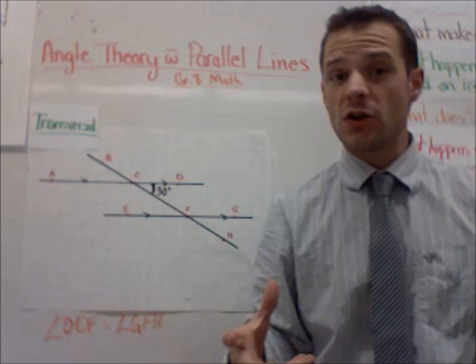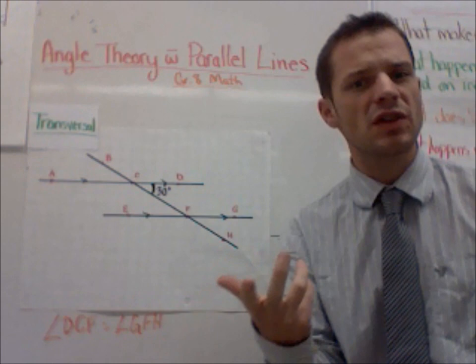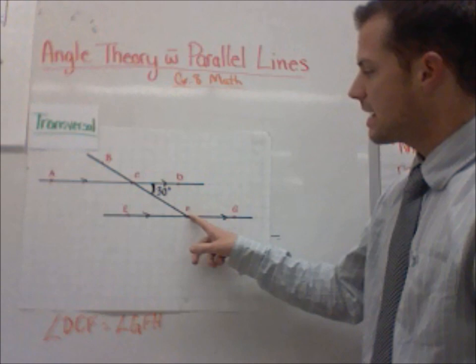What we're going to do is we're going to use some angle theory now to figure out what the missing angles are, because I'm going to give you a diagram just like this one, and I'm going to only give you one angle and say, find me the rest of them. Use angle theory to find me the rest of the missing angles.